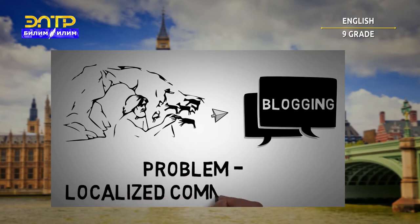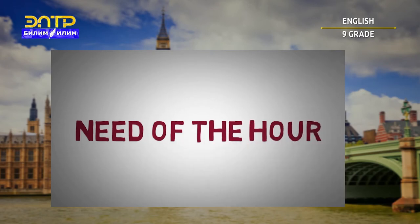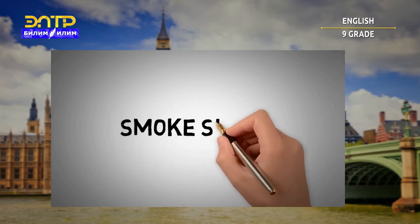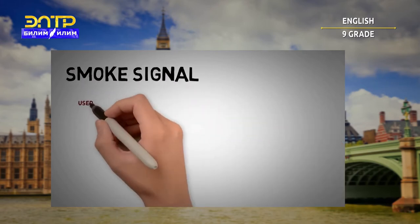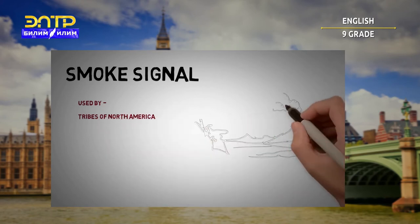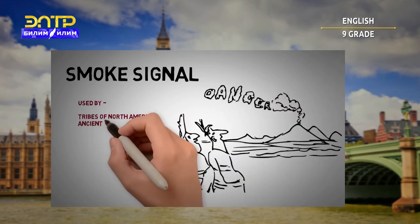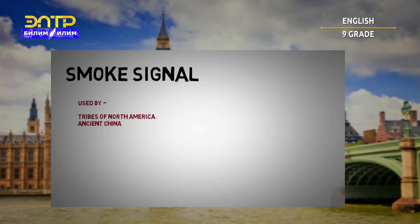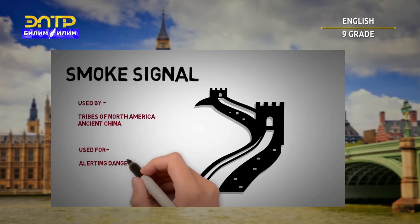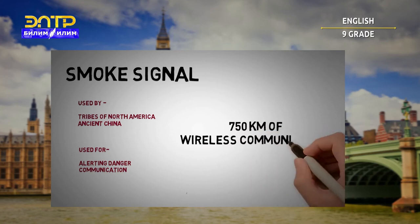The problem with cave inscriptions was that communication was localized. When people started moving out of the cave, long-distance communication became very important. Smoke signal was the first long-distance communication. It was used in Northern America where each tribe had its own signaling system — a smoke from the top of a hill signified danger. Smoke signals were also used in ancient China, where soldiers stationed at the Great Wall would alert for danger using smoke signals from tower to tower, transmitting messages as far as 750 kilometers within a few hours.